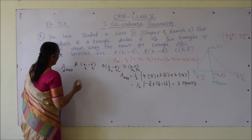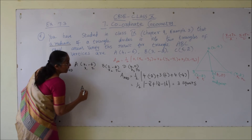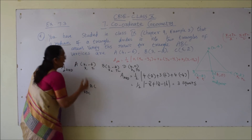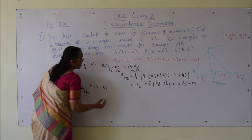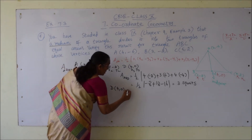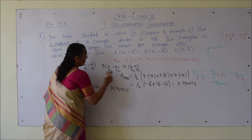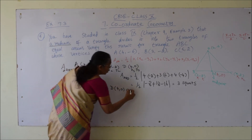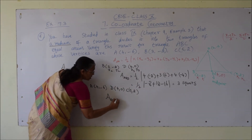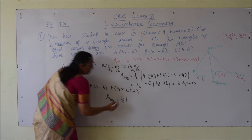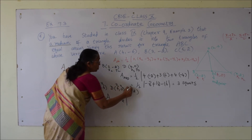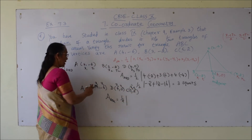Now let us find the area of triangle ADC. The vertices are: A(4, -6), D(4, 0), C(5, 2). So x1, y1 = (4, -6), x2, y2 = (4, 0), x3, y3 = (5, 2). Area equals half times |x1(y2 - y3) + x2(y3 - y1) + x3(y1 - y2)|.